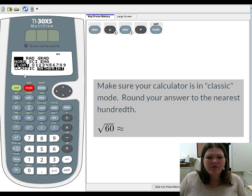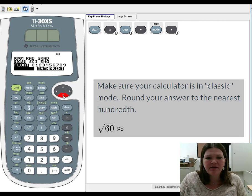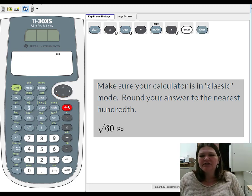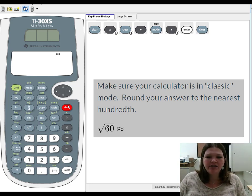And instead of being in math print mode, this time I do want to be in classic mode. I want the decimal approximation type answers. So I'm going to go ahead and arrow over the word classic until it's blinking black on classic. Press enter to select and again clear to get out of that screen. And now I should be able to type the square root of 60 again, but this time I'll get the decimal answer right from the start.